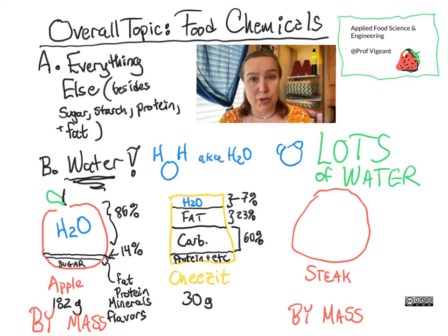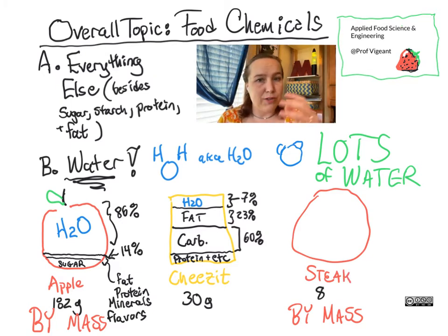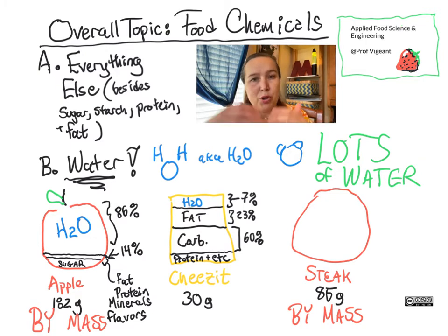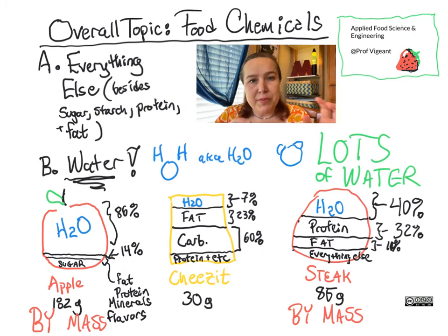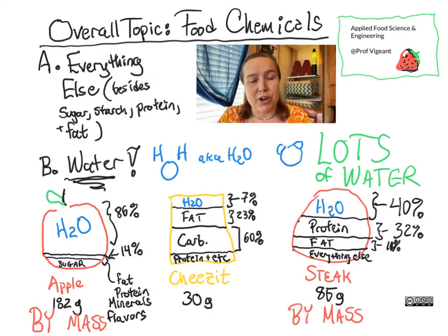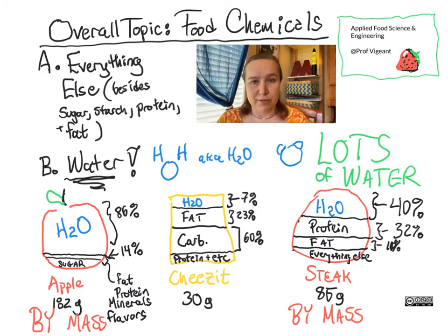The flavor chemicals are the stuff that actually makes a strawberry taste strawberry flavored. These tend not to be specifically a starch or a protein, although there are some flavor proteins. These tend to be different classes of chemicals whose makeup and mixture is unique to the different foods, which is why they taste and smell so differently.